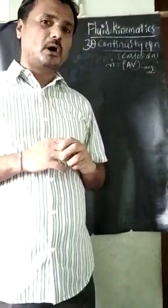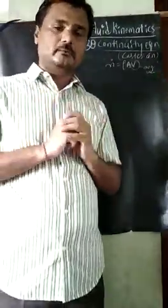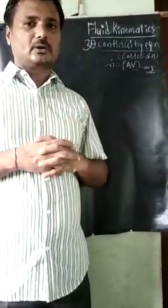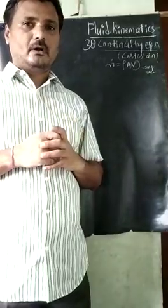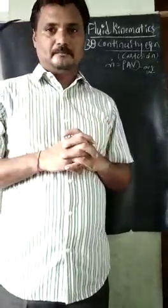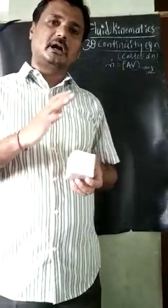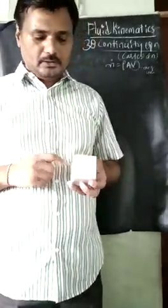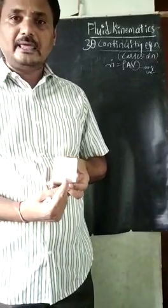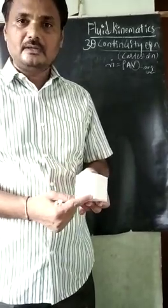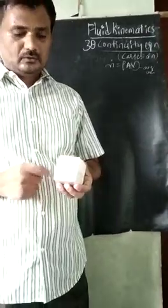Cartesian coordinates are also called rectangular coordinates. In simple terms, the coordinates are X, Y, and Z — all in linear directions. For example, if we take a cube, we can identify the Cartesian coordinates: one edge is the X-axis, another edge is the Y-axis, and another edge is the Z-axis. This is called the Cartesian coordinate system.